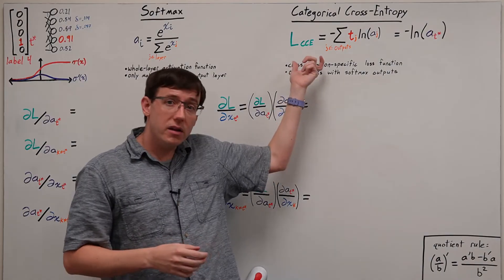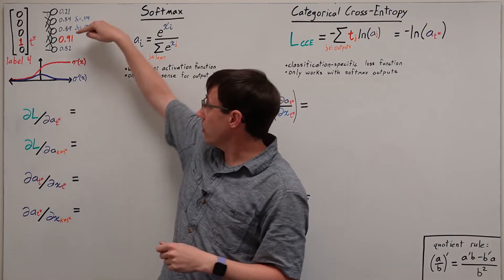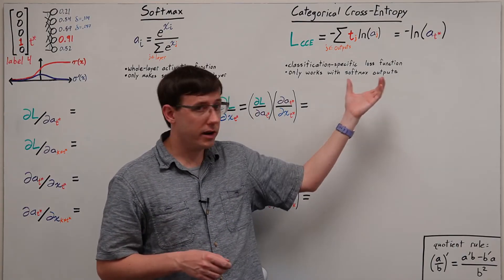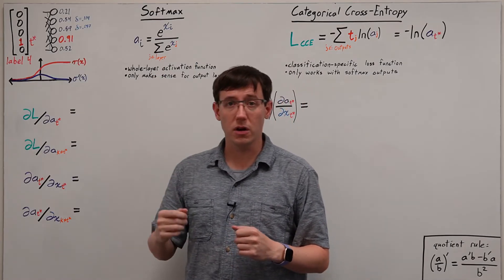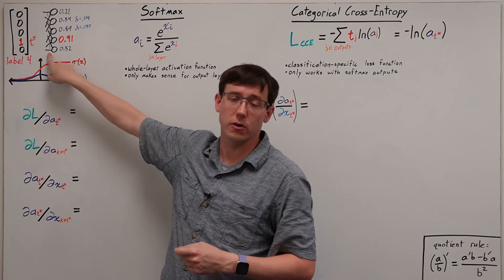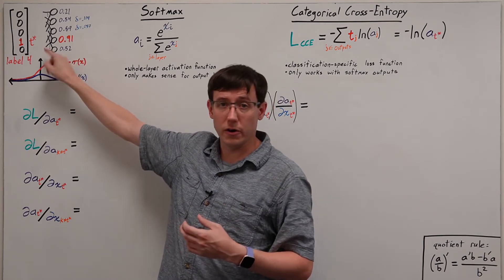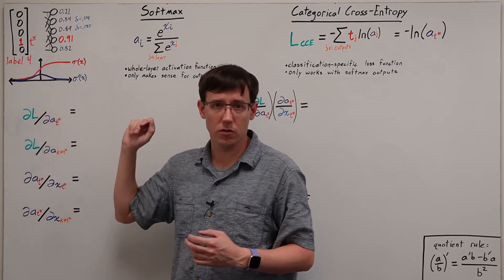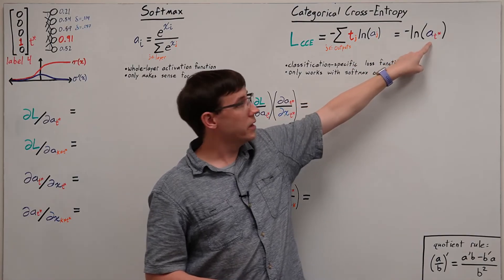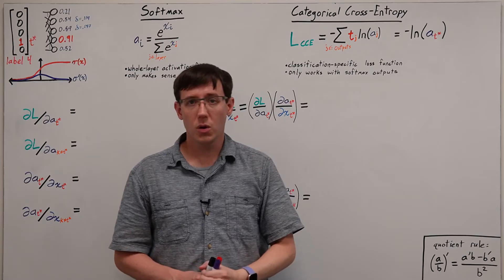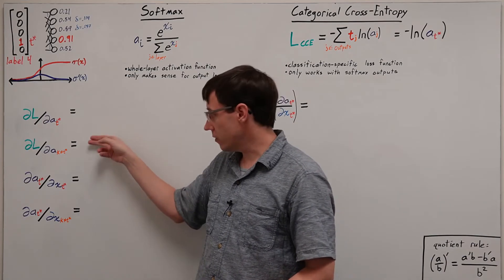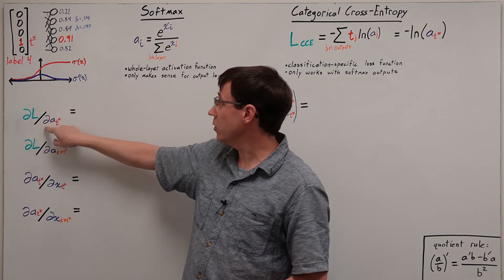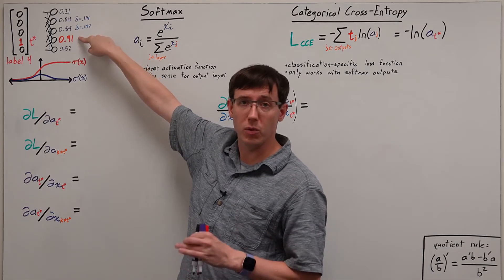And we can think about the gradient of this loss function for both the neurons where we want the output to be one, and for the others where we want the output to be zero. To use this combination of categorical cross-entropy loss and softmax activation, we need to figure out how to compute the deltas for all of the output nodes, which will then serve as the starting point for backpropagation. So let's start by thinking about the partial derivative of the loss with respect to the activations. Since our loss function looks very different for T star than for any of the other output nodes, we'll look separately at partial derivatives for T star and for the other neurons. And so first we want to figure out how does the loss change with respect to the activation of the node whose label we want to be one.